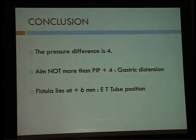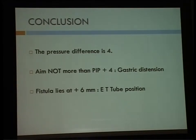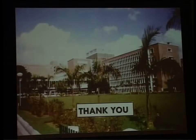We concluded that the pressure difference was plus 4, and so we have to aim at providing a peak inspiratory pressure of not more than plus 4 — preoperatively, intraoperatively, or postoperatively — as exceeding it might lead to gastric distension. The fistula lies at an average distance of about plus 6 mm from the carina, and hence the ET tube positioning should be guided accordingly.